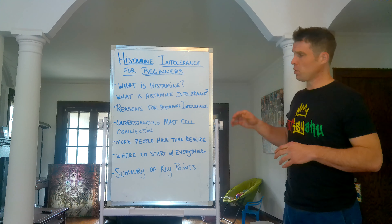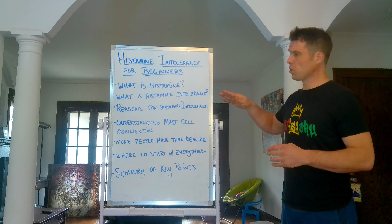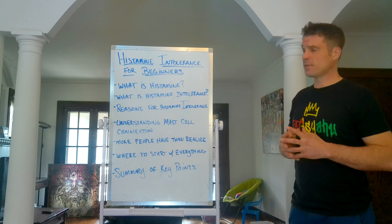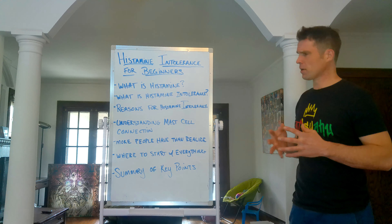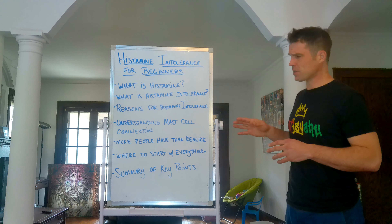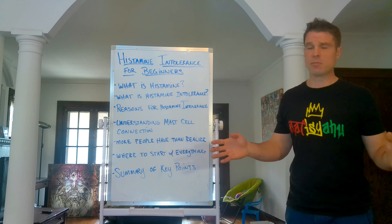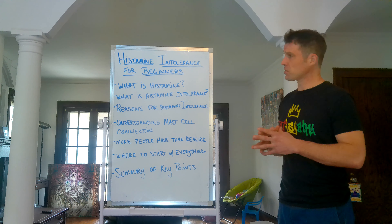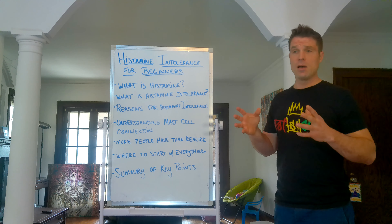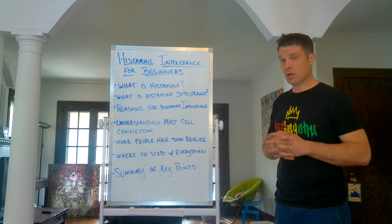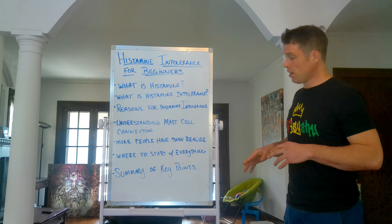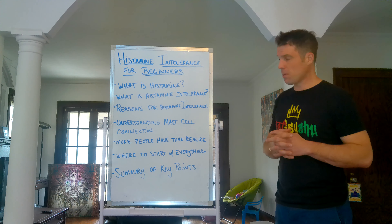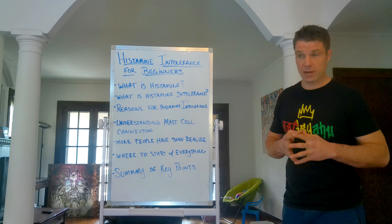Summary of key points: Histamine is a very important molecule in the body that drives inflammation throughout the whole body. Histamine intolerance is when you have too much of it for too long and then become intolerant to things that increase or contain histamine. The reasons for histamine intolerance are almost always a chronic infection or a combination of chronic infections. Mast cells are the most important part — they secrete histamine inside the body, and without understanding the mast cell connection, you won't be able to beat histamine intolerance. Most people with chronic illnesses have some degree of histamine intolerance and mast cell activation. Start with a dietary and supplement symptom log, remove all synthetics, and only take things that are proven in studies to calm down mast cells.